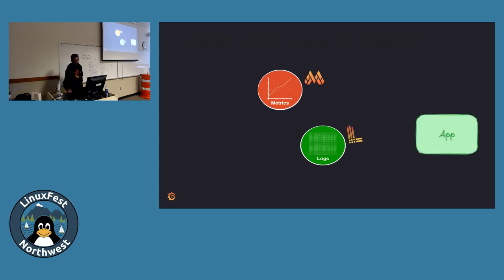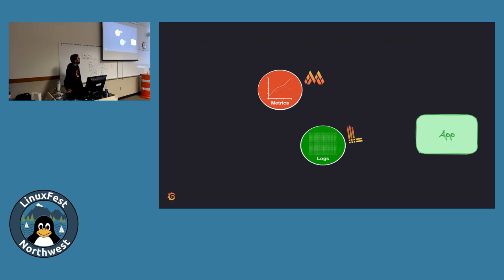For logs, in Grafana we have something called Loki. Loki is a product by Grafana — it is open source. For the record, everything we're talking about right now is available as open source; you don't have to pay. If you run it on your own, everything is free. Loki is just for logs: you can monitor all your logs in one place, even across five to ten servers, all redirected there.